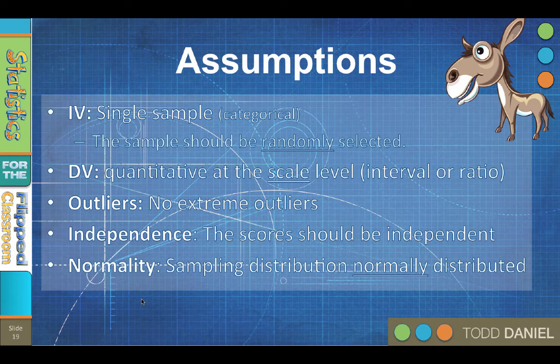The sampling distribution of the dependent variable should be normally distributed, so the dependent variable should be drawn from a population whose sample means are normally distributed. Assuming that the other assumptions are met, this is not an issue, especially when your sample size is greater than 30. See the video on the central limit theorem for more details.